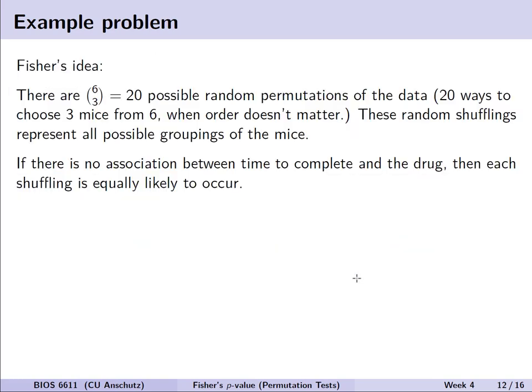Returning to Fisher's idea of how we answer that question of is this meaningful, in this case with six observations, three in each group, there are 20 possible random permutations of the data. Or in other words, 20 different ways we could choose three mice from the six when the order doesn't matter. These random shufflings will represent all possible groupings of the mice, assuming what if this mouse had the exact same time if it happened to have been in the other group? In other words, there's no effect of the treatment. Again, if there's no association between time to complete the maze and the drug, we would expect the shuffling is equally likely to occur regardless of what group the mice are in.